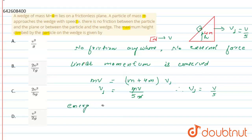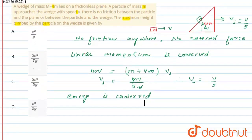Energy is also conserved. So we will apply energy conservation, which means the initial energy is equal to the final energy. Initially, only small m is having kinetic energy and there is no potential energy. So the initial kinetic energy is half m v squared.